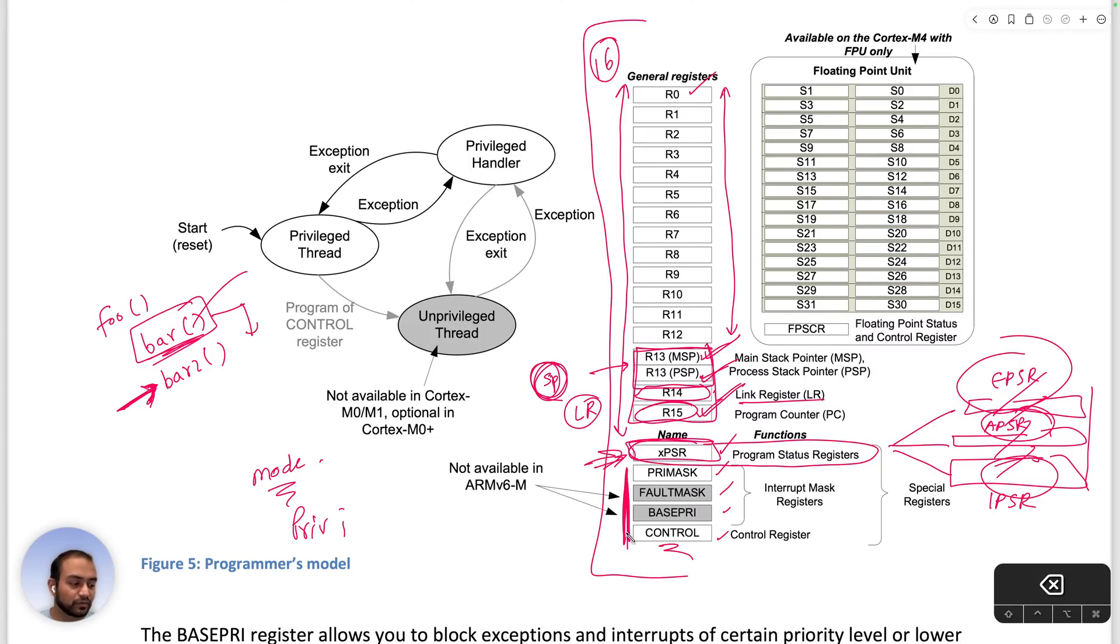Then we have some interrupt-related registers here. Priority mask, fault mask, and base priority. The idea is the CPU can have many interrupts. And to each interrupt, you can assign a priority, zero, one, upwards. And using the base priority and priority mask, you can control which interrupts are allowed to be attended to and which interrupts are to be ignored. And this is kind of a binary control, meaning if you have priorities from, let's say, zero to 255, you can choose to attend to all interrupts which are priority 10 and less and ignore everything that's 11 and upwards. That kind of control you get through these three registers.